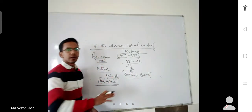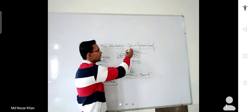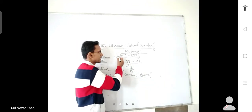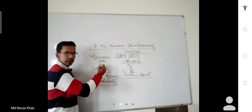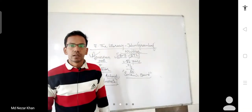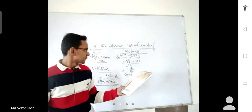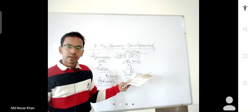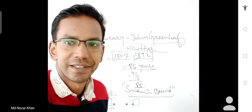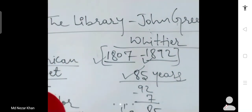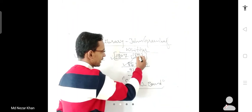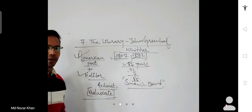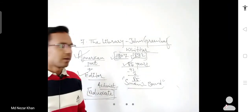So this much information we can remember about the writer whose name is John Greenleaf Whittier. He was born in the year 1807, died in the year 1892. He was having the life of 85 years. He was an American poet. Can you see on the board? Let me zoom it more. Now it is fine. So this much information about the writer we all can remember.